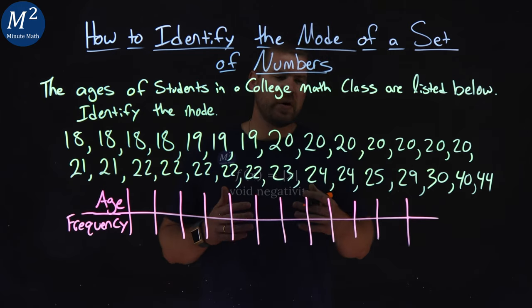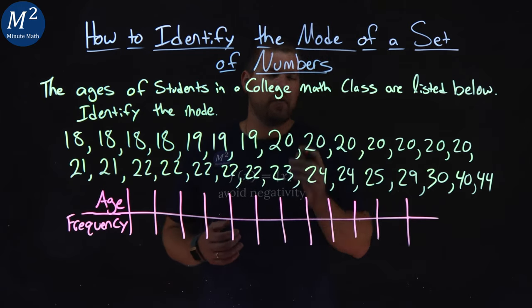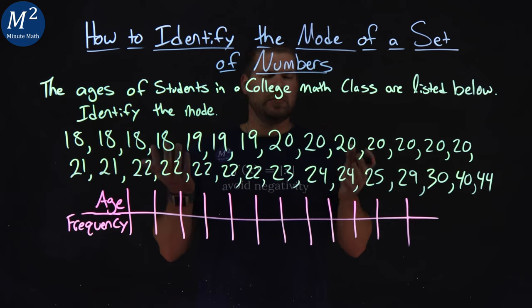The mode is known as the most. It's a way to remember which one of these numbers is really the most, which one we have the most of.